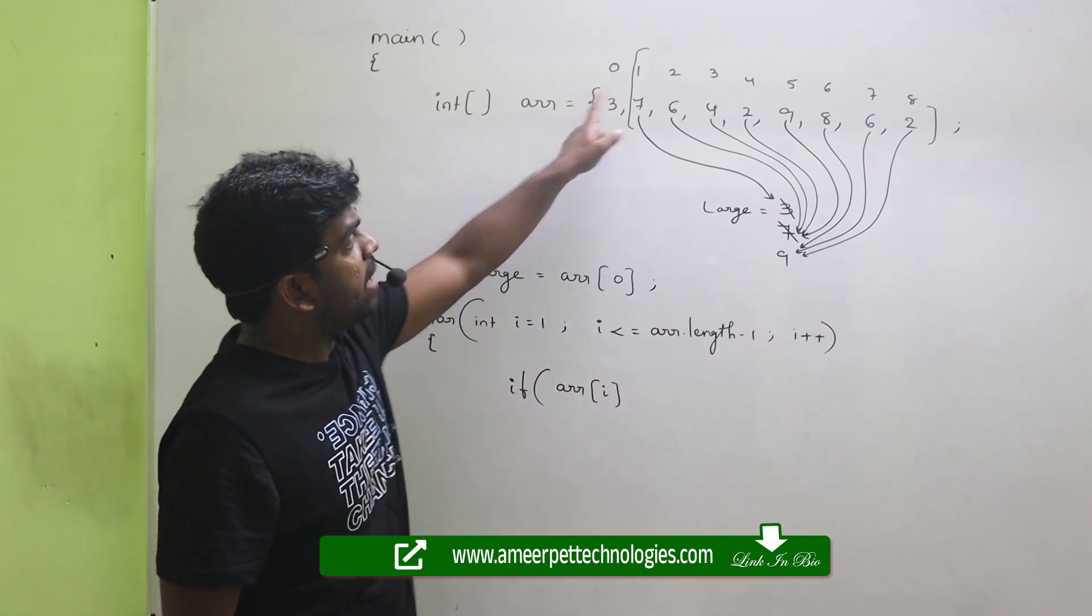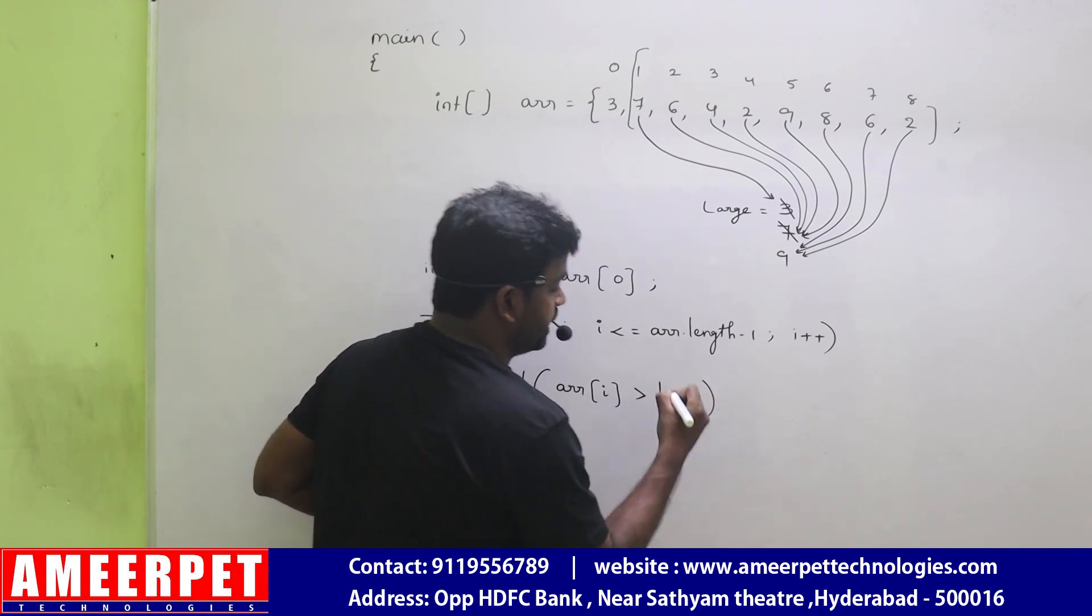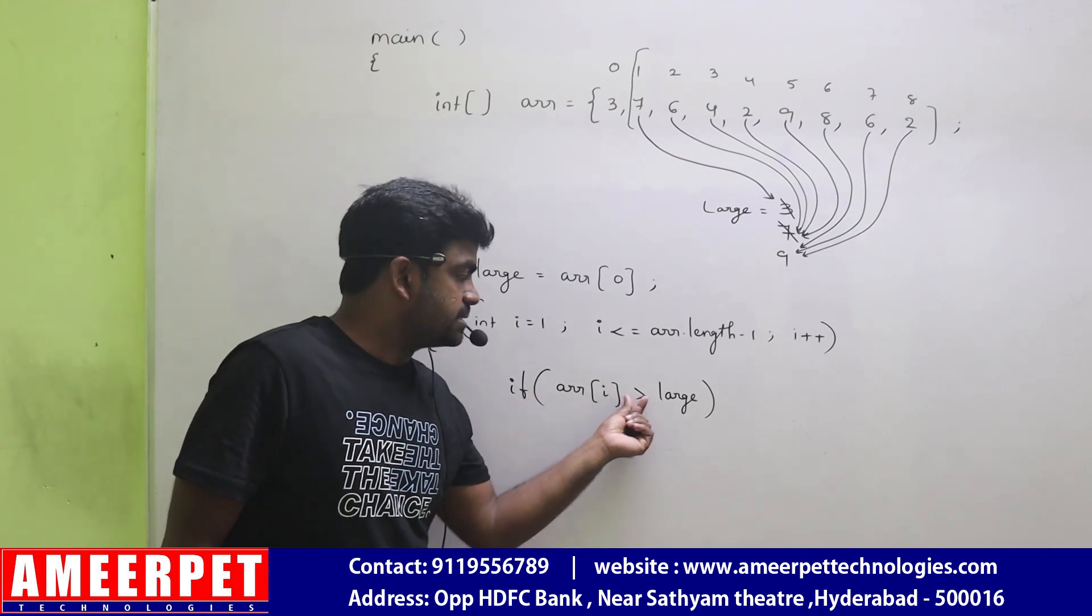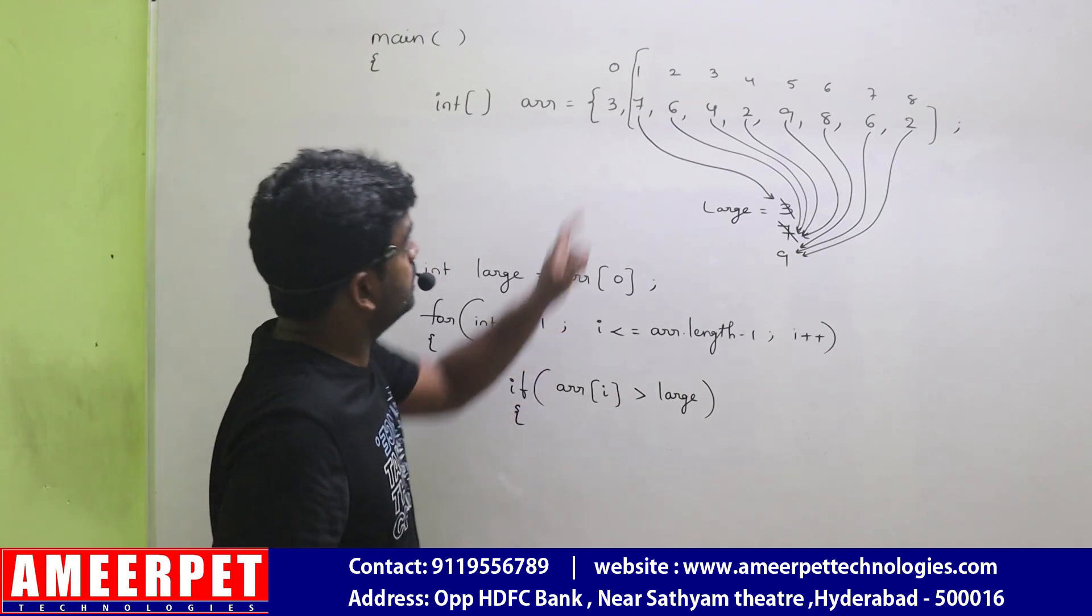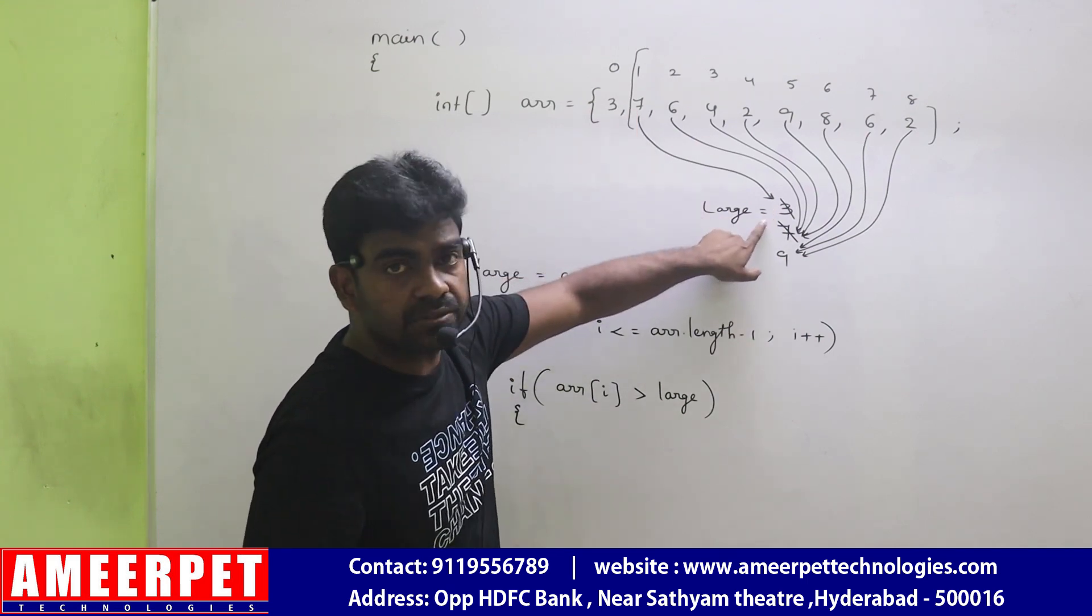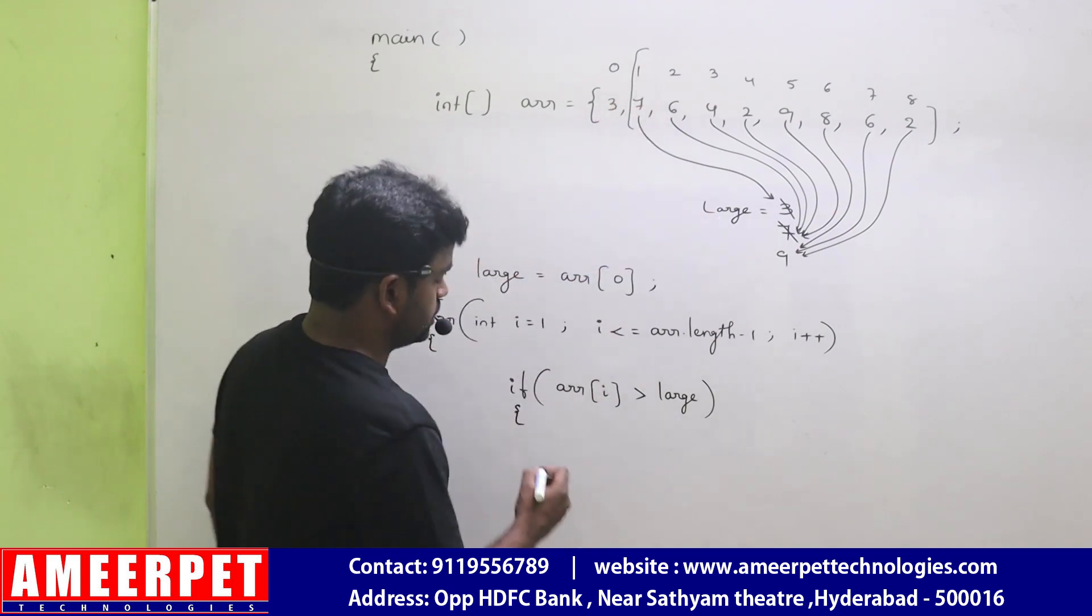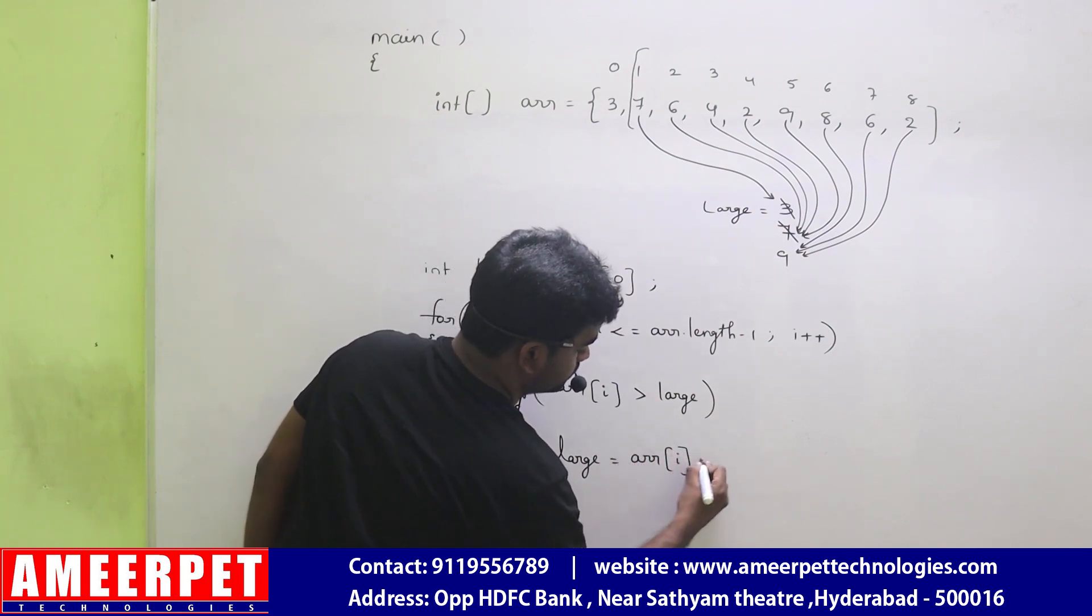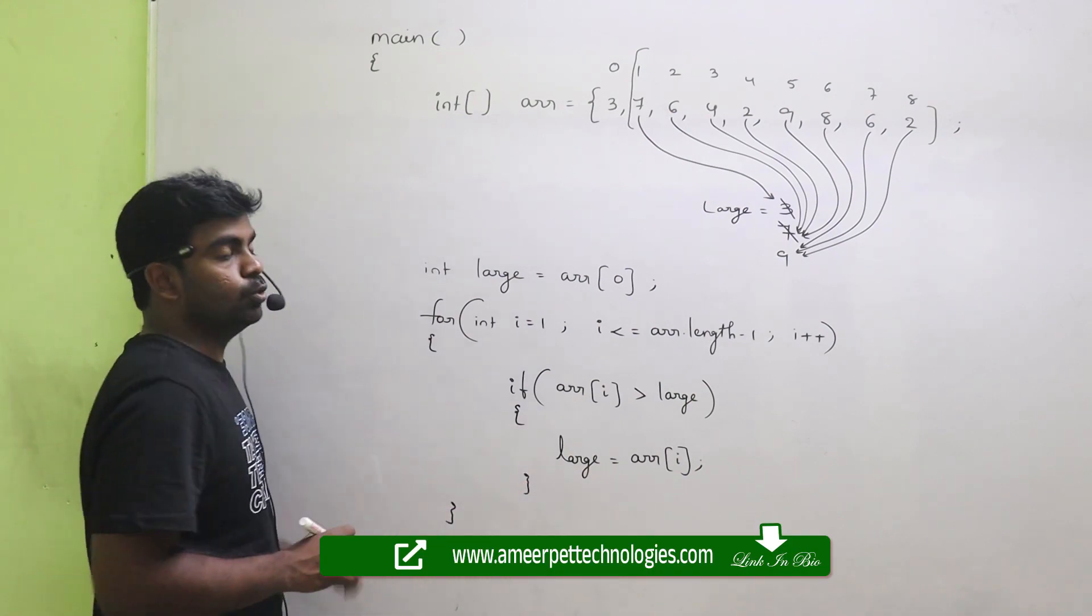If ARR of I is greater than the largest element that we already considered, then simply store it. 7 is greater than 3, then store this 7 in place of this 3. ARR of I into large. Store ARR of I. And this will repeat until the loop ends.